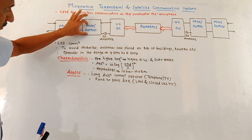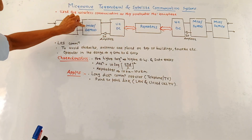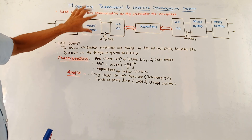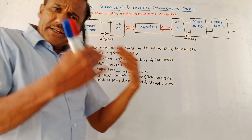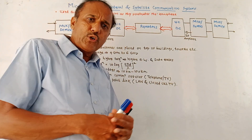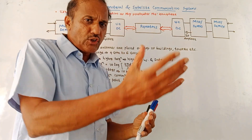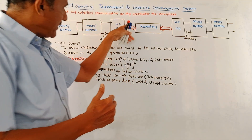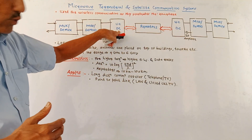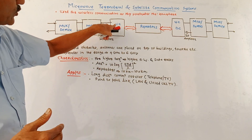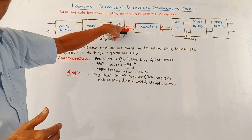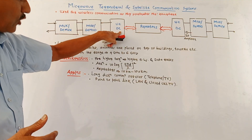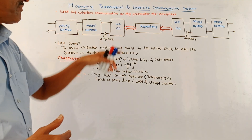We also make use of modulators and demodulators. Many times it is required to make a conversion of frequency, so up converters and down converters are used. UC stands for up converter and DC stands for down conversion.